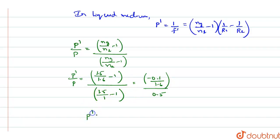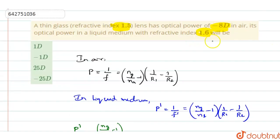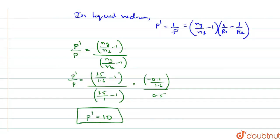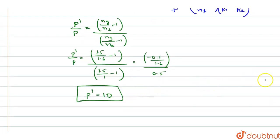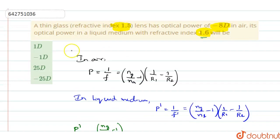And so, P dash, you will get it as 1 diopter. So, when the refractive index of the medium becomes 1.6, the diopter value, the power value becomes 1 diopter. So, you can see for option, according to the answer, option 1 will be the right answer. 1 diopter is the correct answer.